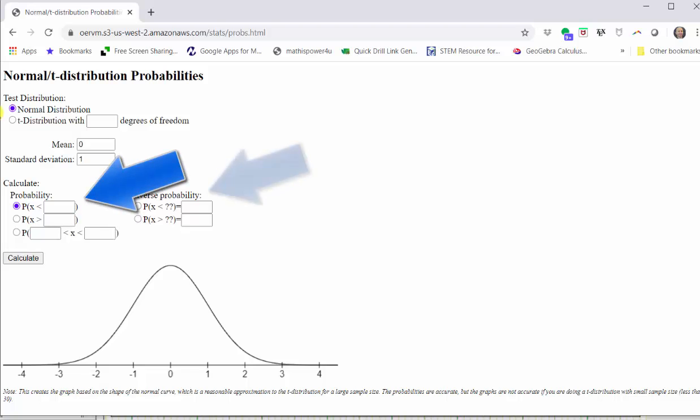To determine inverse probability, we use these two options. So we will be using these three options here on the left. And because we're looking for the probability the z-score is greater than negative 0.6, we select the second option where we have the probability of x being greater than a particular value. Again, because the mean is zero and the standard deviation is one, this x-value is the same as the z-score. And therefore, we enter negative 0.6. And then we click Calculate.